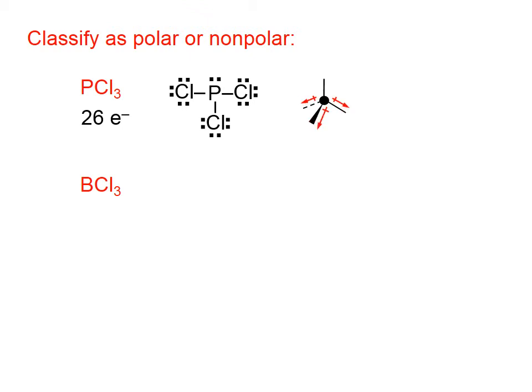And we will get bond dipoles that look kind of like this, where the bond dipole points towards the chlorine, and this is in three dimensions, and away from the phosphorus. Again, we ignore bond pairs whenever we're worried about overall polarity.